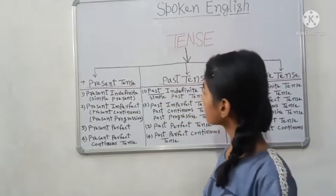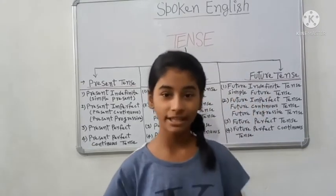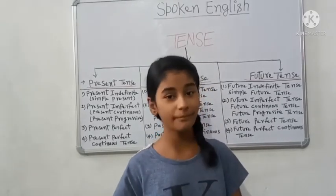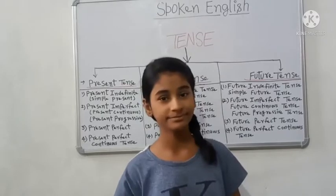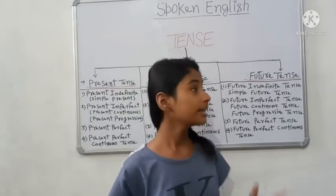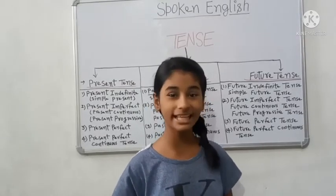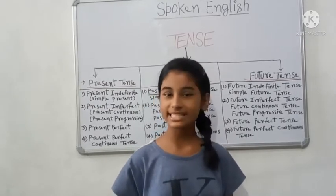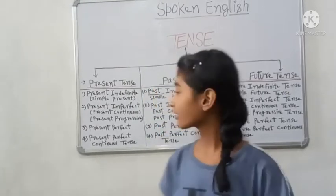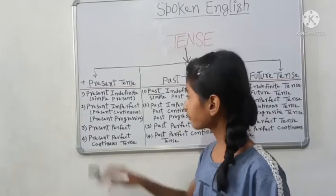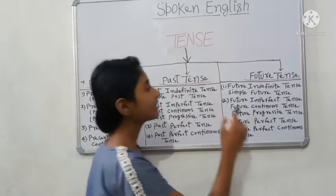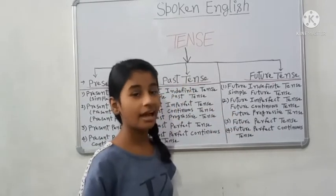So first — what is tense? Present tense, past tense, and future tense. But if we look at tense without its parts, tense is called time. It means tense refers to time — present (aaj), past (kal), and future.